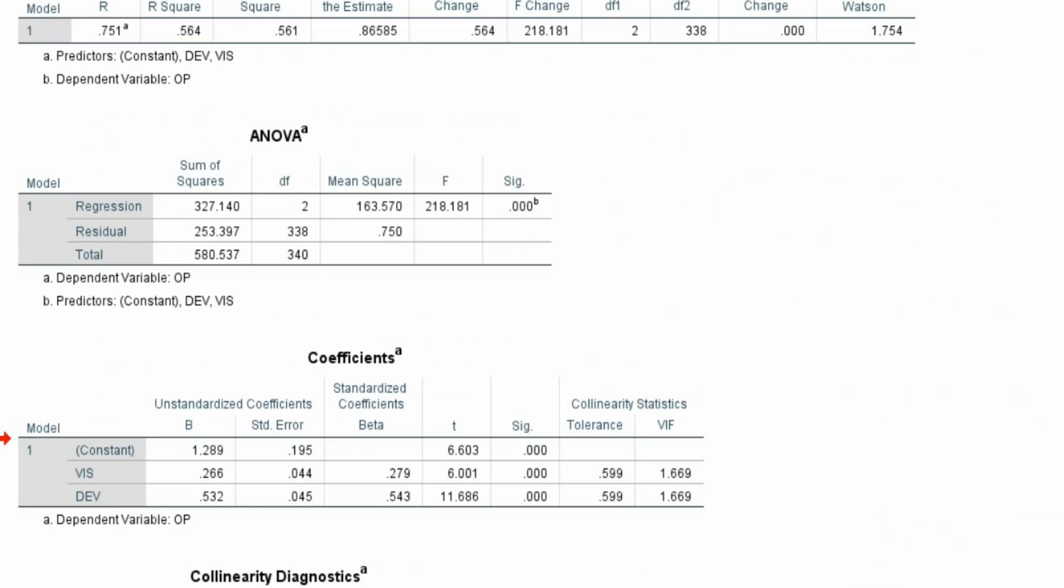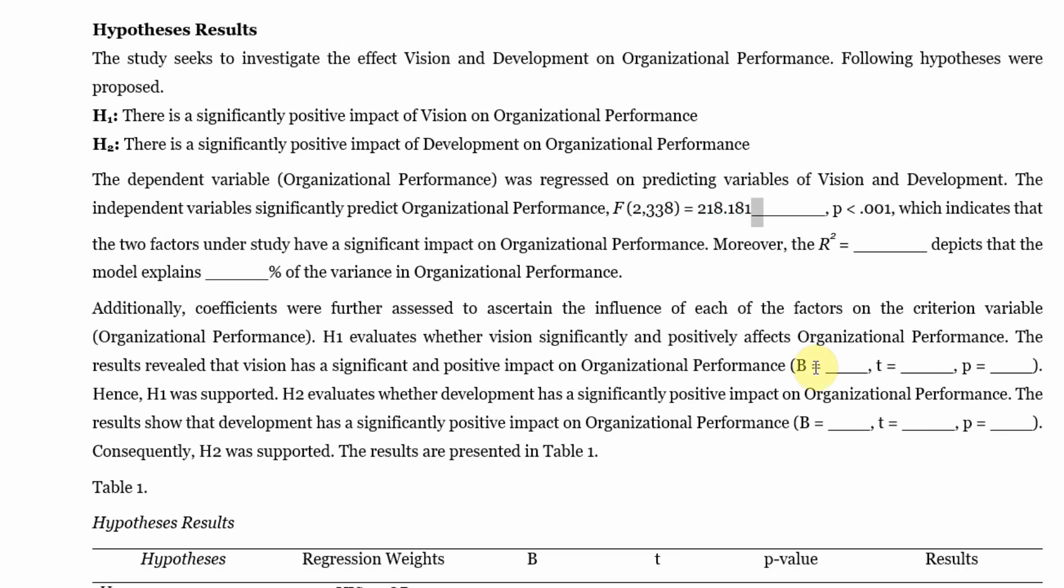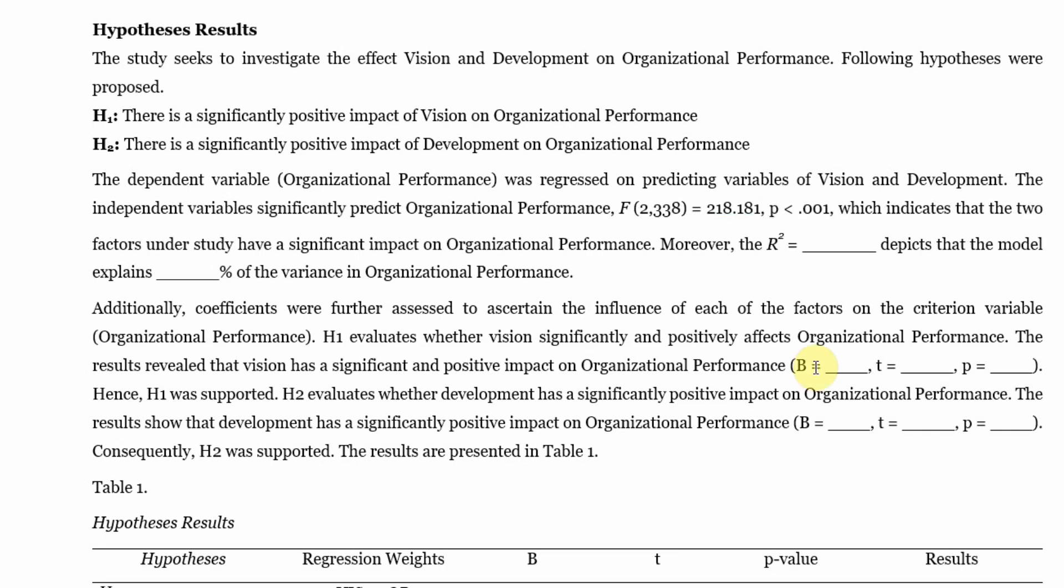Let's have a look again. 218.18, 218.181. The p-value was less than 0.001 because it is 0.000.